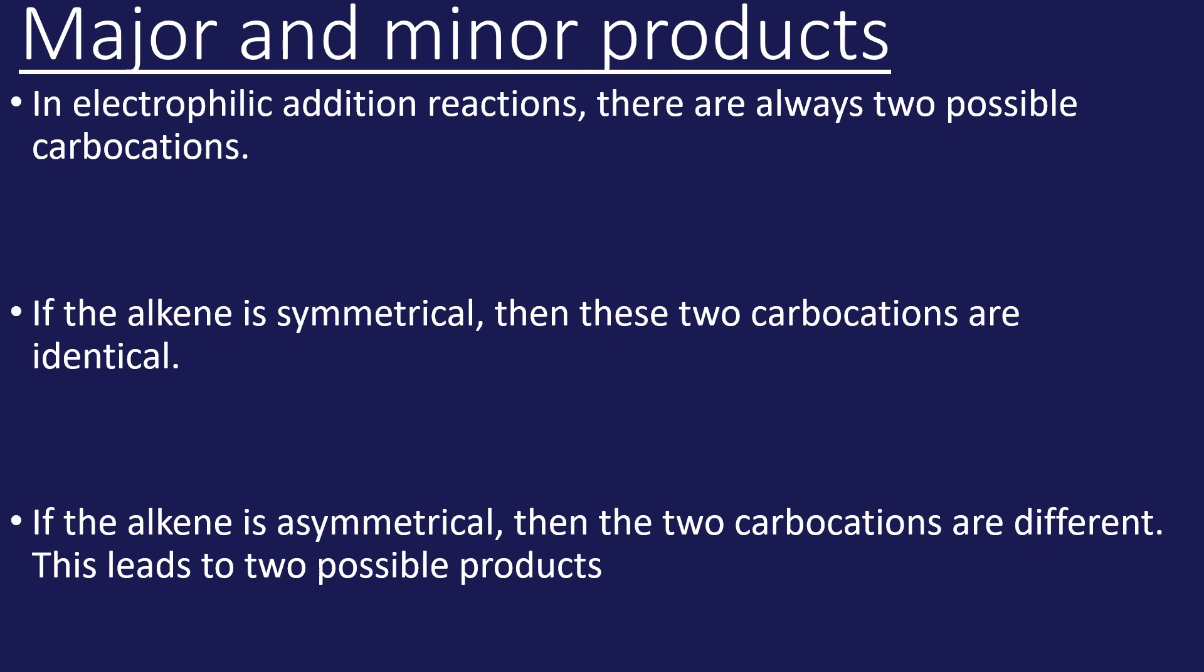Let's look at the reaction of HBr with propene. That is classed as an asymmetrical alkene because there's different groups on both carbons in the double bond. The carbon on the left has H and H, carbon on the right has H and CH3. HBr is a polar molecule, bromine is more electronegative than hydrogen.